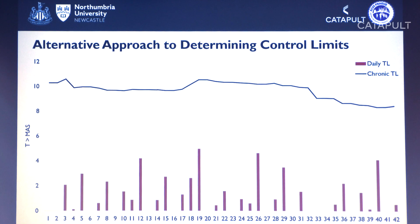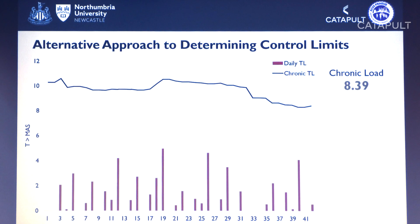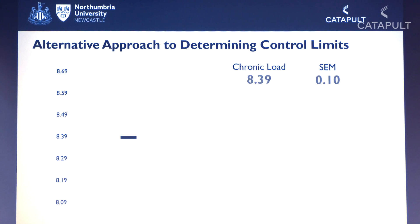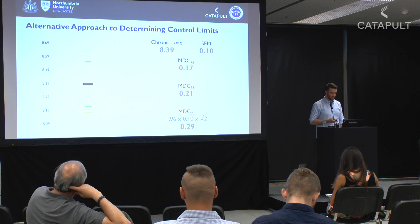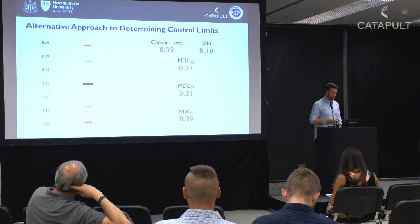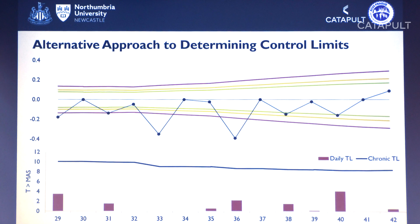Here's a step-by-step practical example using club data over a six-week period. We have training load along the bottom and chronic load at the top. Our chronic load was 8.39 and the standard error was 0.1. At 75% confidence we multiply by 1.15; at the next level by 1.44; and at 95% confidence by 1.96. You can see how that gives three levels above and below where the chronic load sits, so we can assess how confident we are that a real change has occurred. Over a 14-day period you can see how the athlete's data moves above and below certain control limits, allowing us to apply the rules and adapt training accordingly.